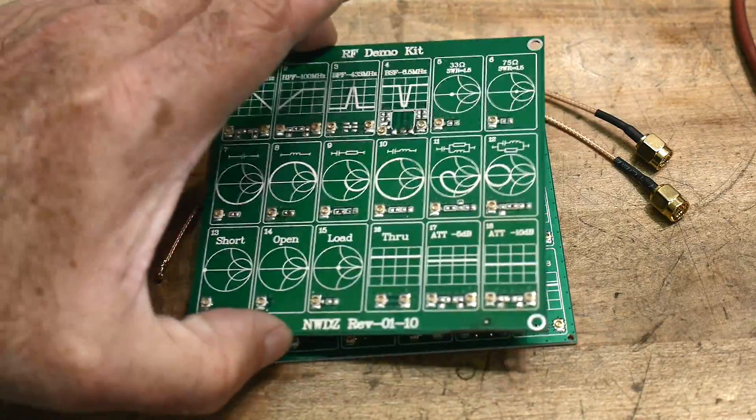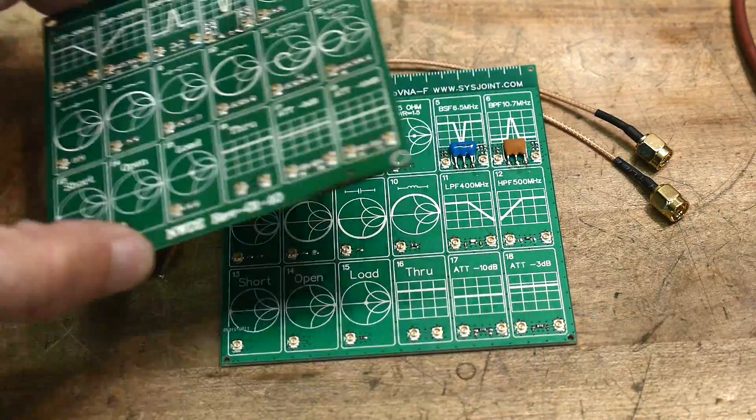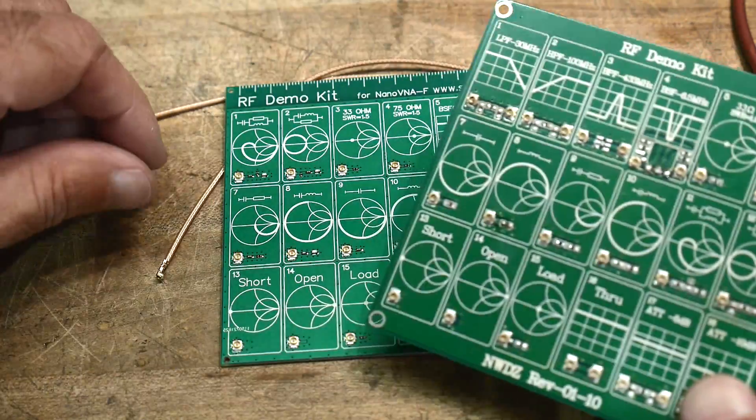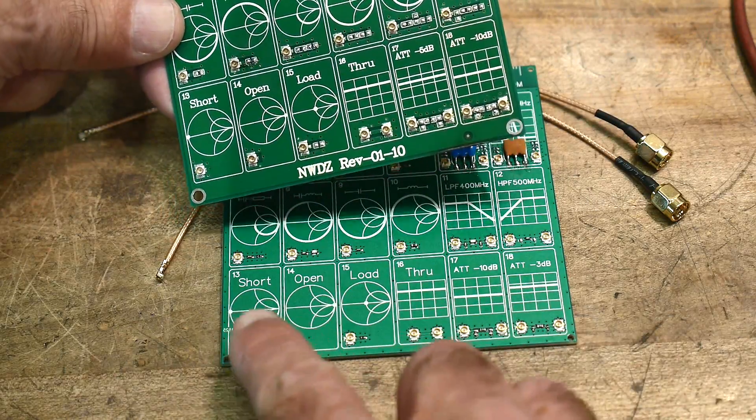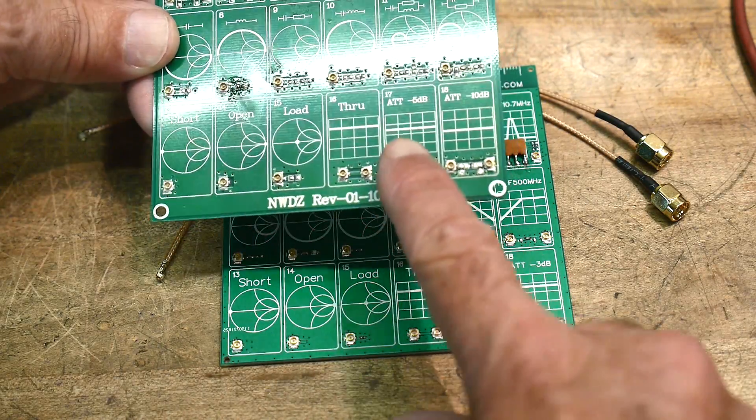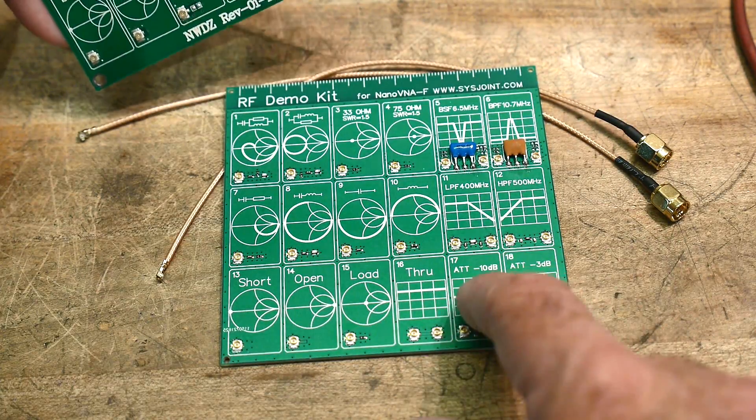This is the one that I reviewed and you can say, oh well, they're the same. Well, they're not exactly the same. We have a short open load that's the same. Then we have a minus 5 dB and a minus 10 dB. Here we have a minus 10 dB and a minus 3 dB, so that's different.